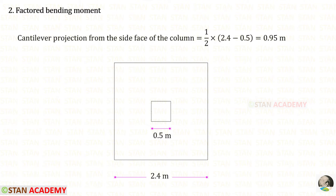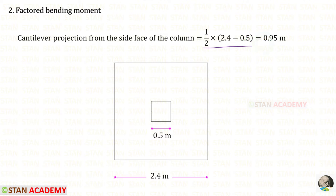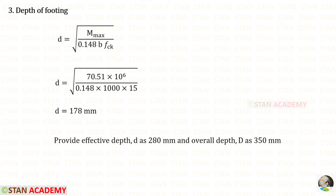Now we find the factored bending moment. We need to find the cantilever projection. The footing side is 2.4 m and the column side is 0.5 m. The total overhang = 2.4 − 0.5 = 1.9 m, and since we need only one side, the cantilever projection = 1.9/2 = 0.95 m. Using this, we can find the bending moment, and then using that, we can find the effective depth of the footing.